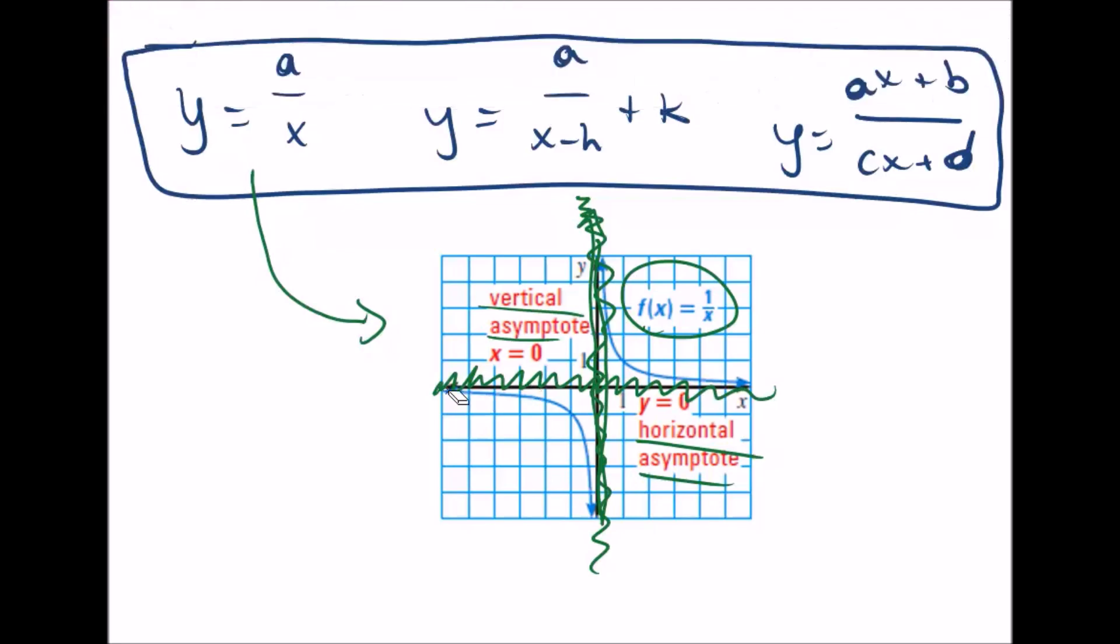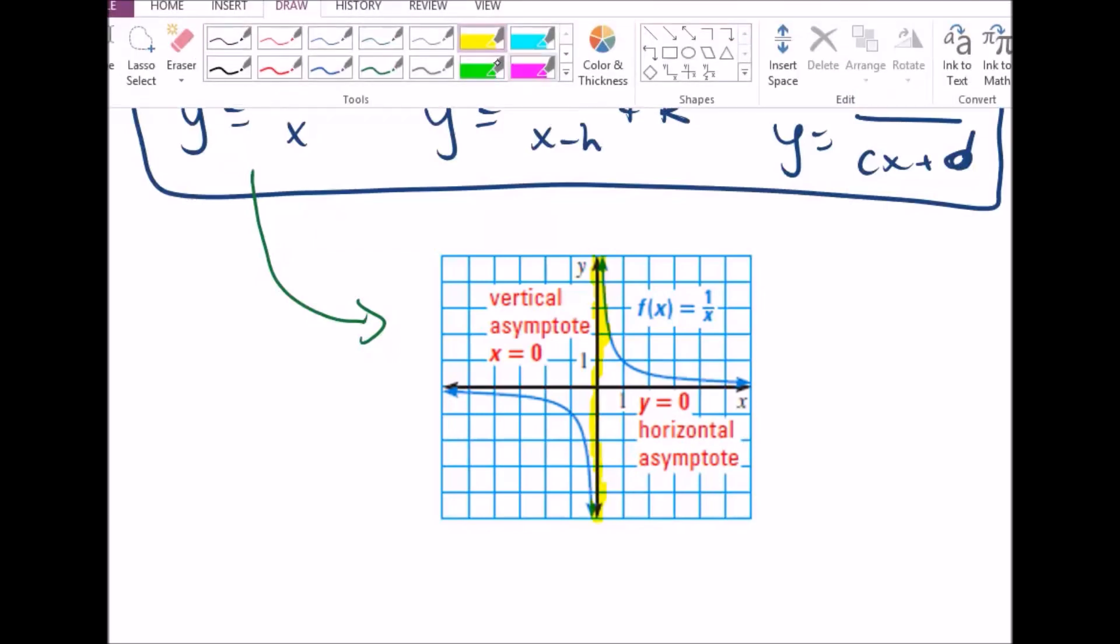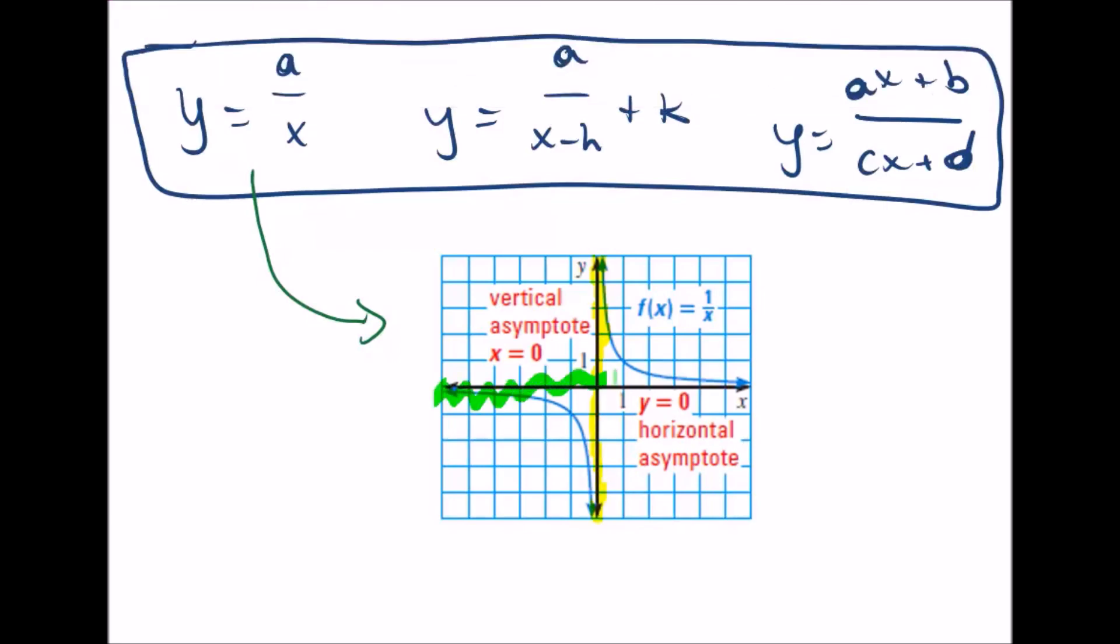I made a huge mess of this, so let me draw that again. So in the most basic form, there's a vertical asymptote at x equals zero right here, and there's a horizontal asymptote at y equals zero right here. That splits those two apart.